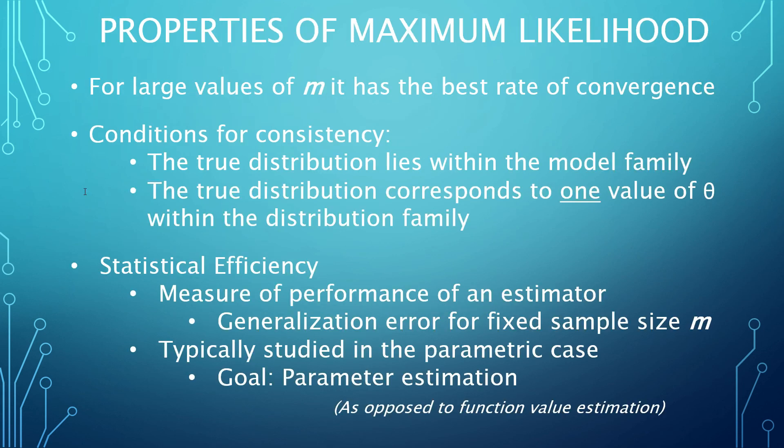The maximum likelihood approach is often the preferred means of creating an estimator for machine learning because of its consistency and efficiency. The method is consistent when these two conditions are true. First of all, the true unknown distribution must be a member of the family of distributions for which a function is being estimated. For example, if you are seeking to determine a parameter for a normal distribution to fit the data, but in fact the data is uniformly distributed, then the process won't be consistent. Secondly, consistency is only assured if the true distribution is described by only one particular set of parameters within that distribution family. If more than one parametrization would yield the same distribution outcome, then the method can't be assured to provide the parametrization corresponding to the true distribution.